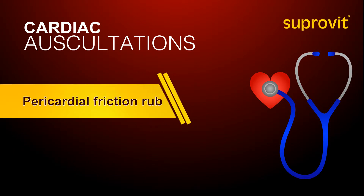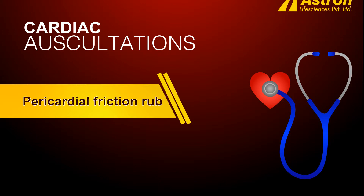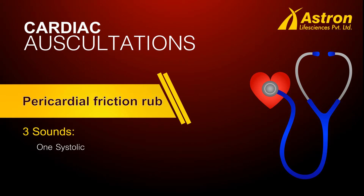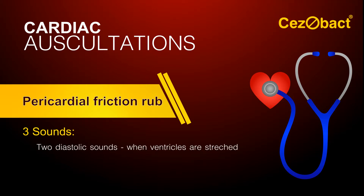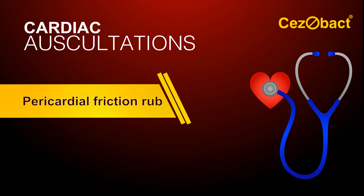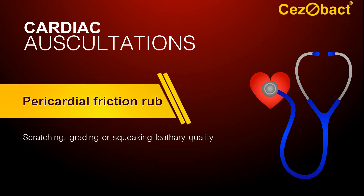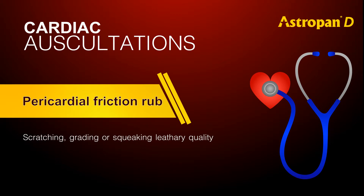Pericardial friction rub. In a pericardial friction rub, there are three sounds: one systolic and two diastolic. The systolic sound may occur anywhere in systole, and the two diastolic sounds occur at the times the ventricles are stretched. The pericardial friction rub has a scratching, grating, or squeaking leathery quality.